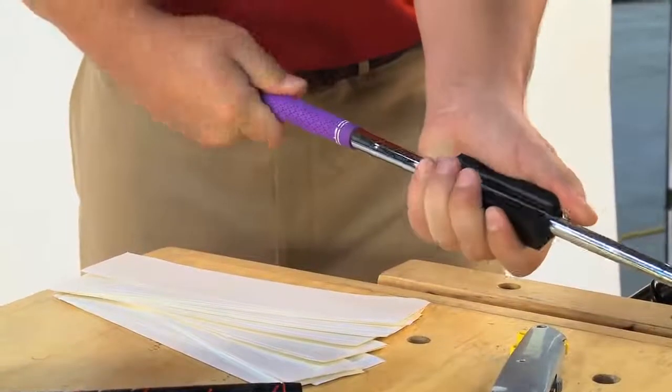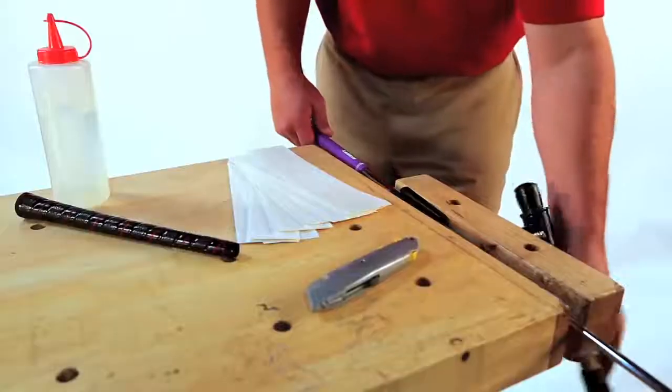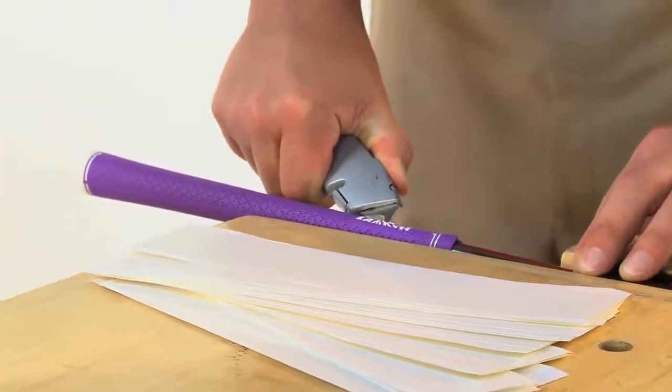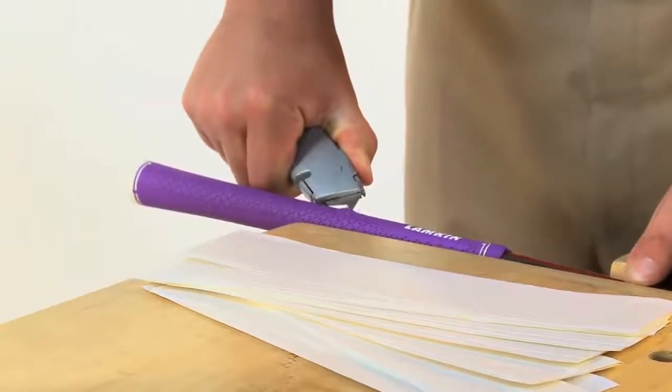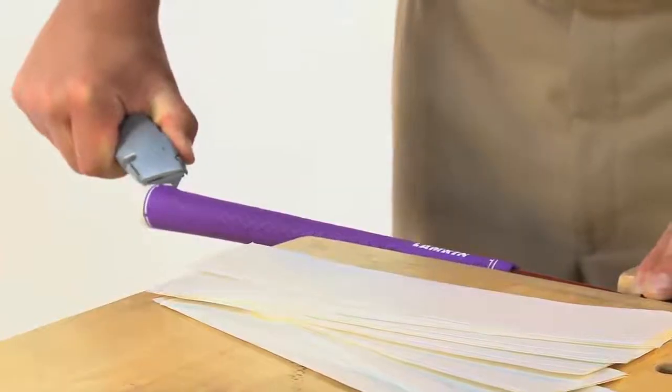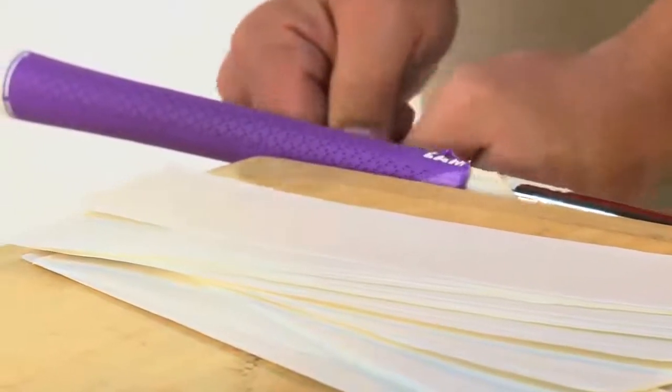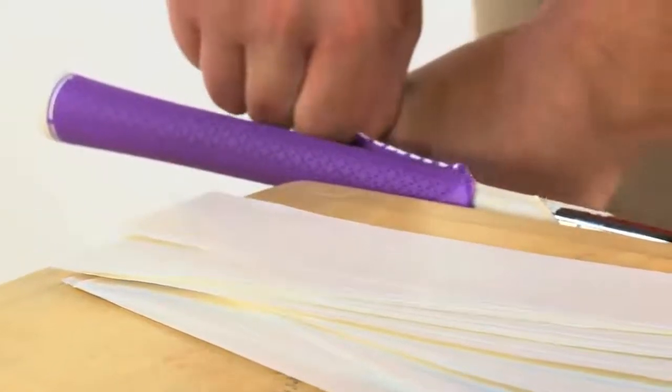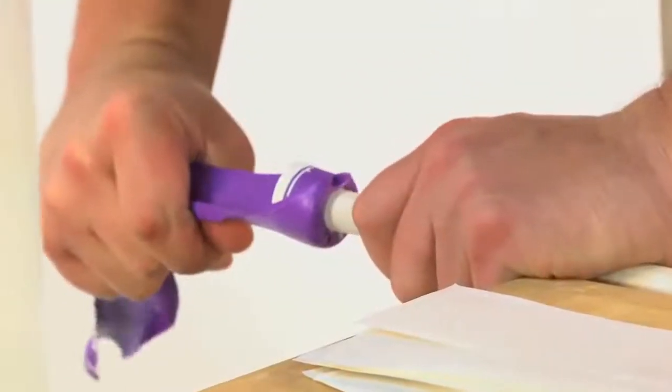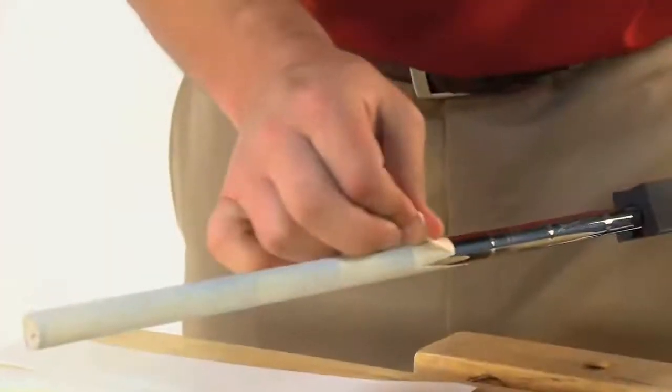Using the rubber vise clamp, secure the club shaft in the vise. Remove the old grip with a utility blade. Be careful and always cut away from yourself at all times. Peel back and remove the old grip.